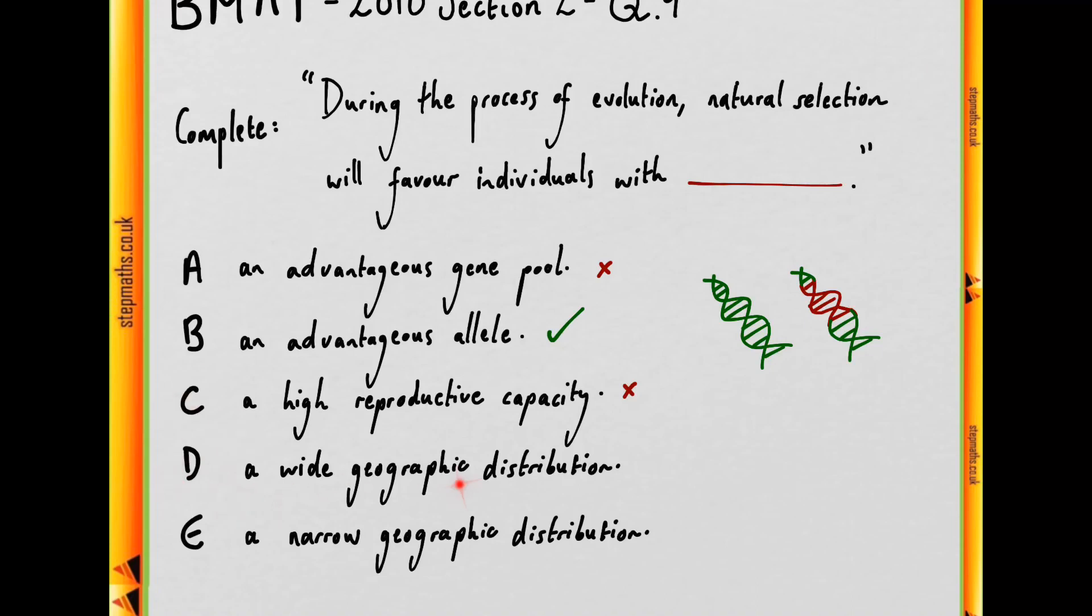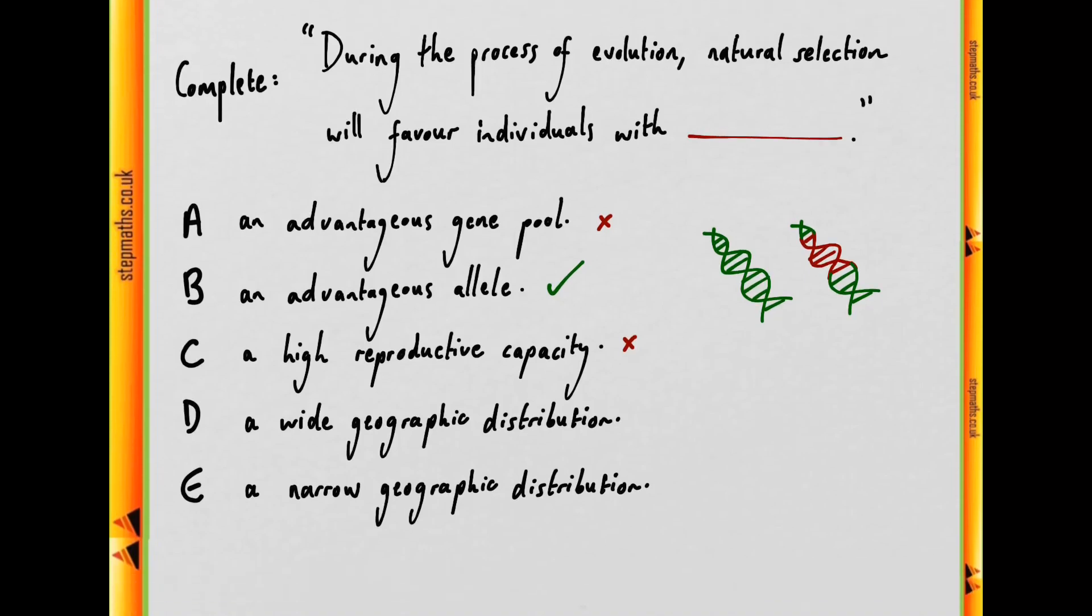Moving on to D, a wide geographic distribution, and we can also talk about E, which is a narrow geographic distribution. Well, geographic distribution in itself is not necessarily something that would lead to natural selection favoring those individuals.